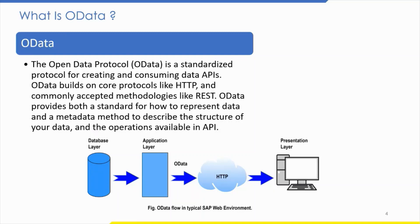SuccessFactors OData API services are based on OData version 2.0. The HCM Suite OData API is a SuccessFactors Web Services API based on the OData protocol, intended to enable access to data in a SuccessFactors system. This API provides method-based CRUD-style access and is used to configure entities. Each SuccessFactors module can be accessed using its own set of entities.